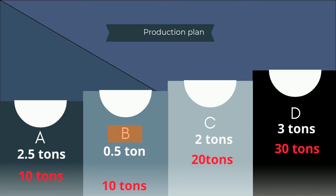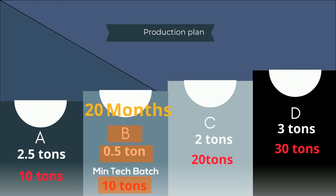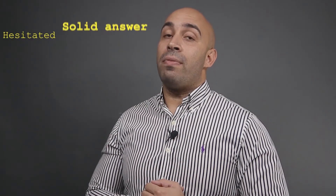Product B has a monthly production plan of half a ton. The minimum technical batch for this product is 10 tons. This MOQ covers product B for 20 months. In that case, shall we produce the 10 tons with a coverage of 20 months? I know you would be hesitant to give a solid answer on this.